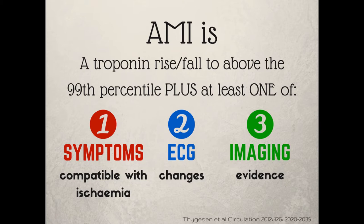You also need one level above the 99th percentile upper reference limit. This tells us what the cutoff is for diagnosing an acute myocardial infarction — it's the 99th percentile of levels measured in apparently healthy individuals. So 99% of healthy people have a level below that threshold. All you need is one concentration of troponin above the 99th percentile and a rise or fall, and then you meet the troponin criteria for the diagnosis of an acute myocardial infarction.